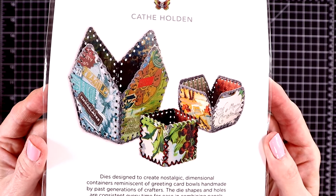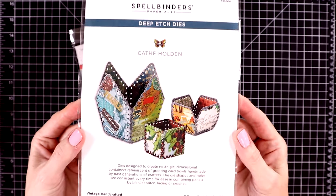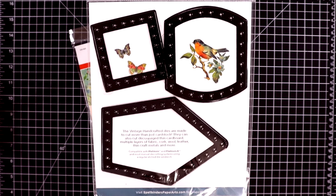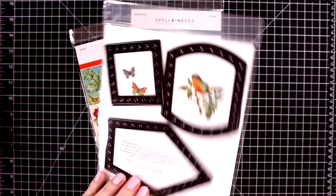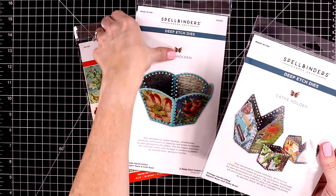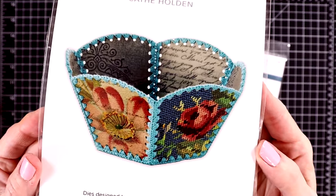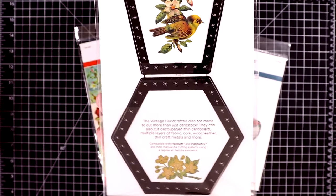This is what they look like. There are two different sets. This first one is called Square Base and Sides Bowl, and then the second one is called Hexagon Base and Side Bowl.